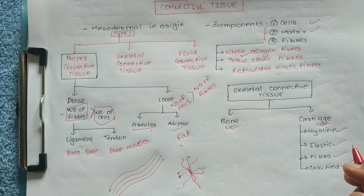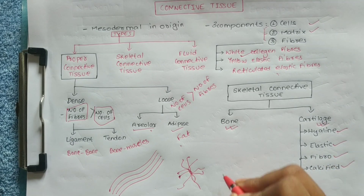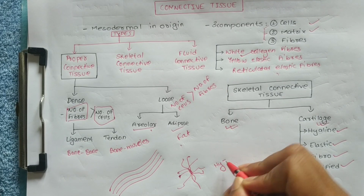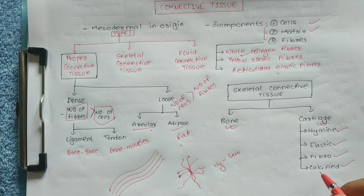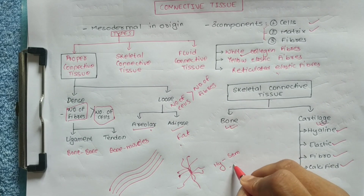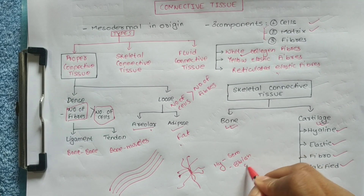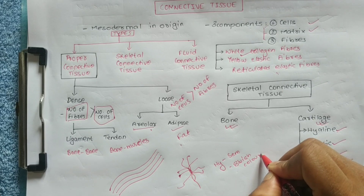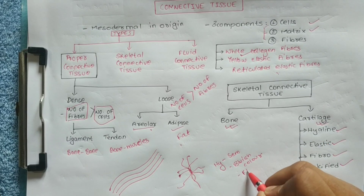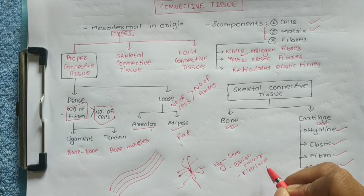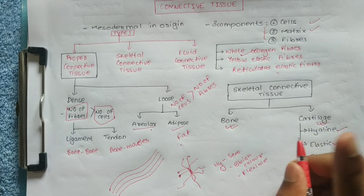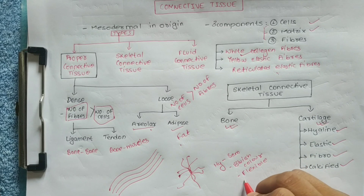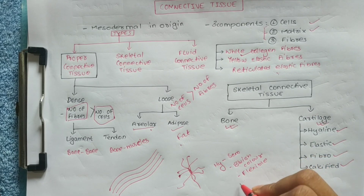Hyaline cartilage is semi-transparent and bluish in color. It is flexible. Examples include the neck tip, ear, and larynx.